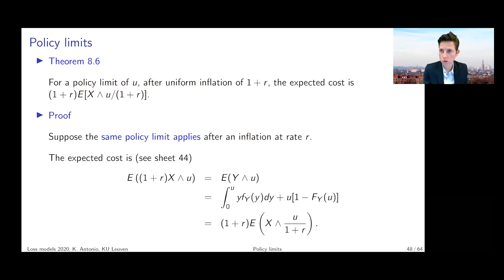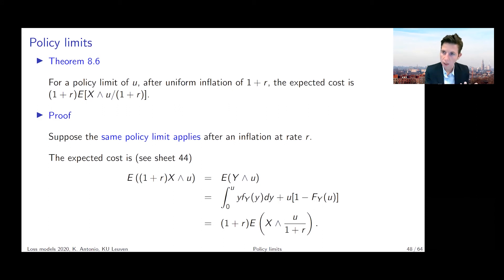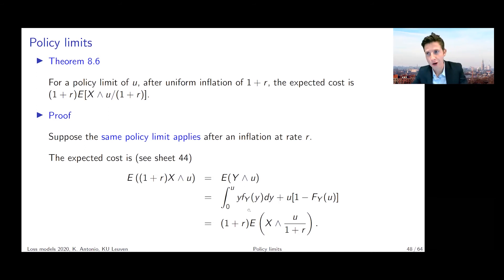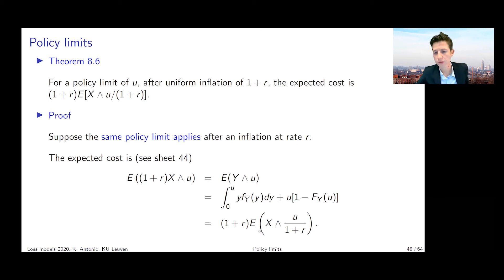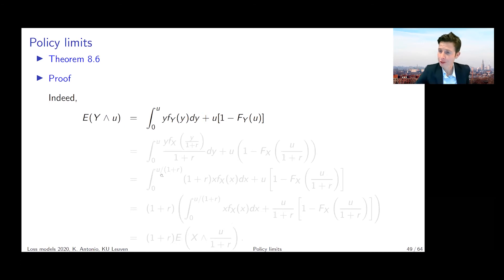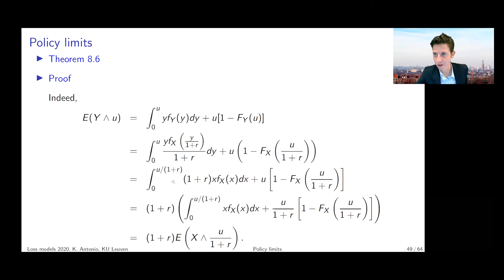Deriving this expected value goes in exactly the same way as the derivation done on the iPad earlier, except on the iPad I worked with the expected value of (1+r)X wedge D, and now I'm looking at wedge U to consider the effect of a policy limit equal to U. The detailed calculation is provided on the sheet in case you want to convince yourself that this expression works.